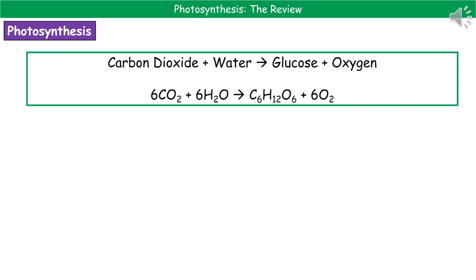So what actually happens in photosynthesis? We need to know both the word and symbol equations. Our plants start with two reactants — carbon dioxide and water — and make two products: glucose and oxygen. You've got the word equation at the top. If it asks for a word equation, make sure you write the full words — don't abbreviate to symbols.